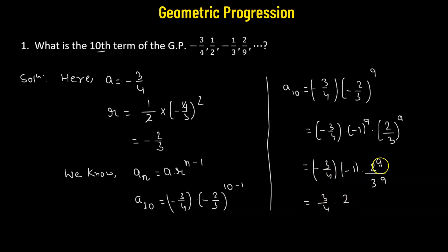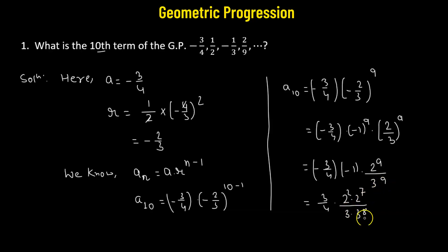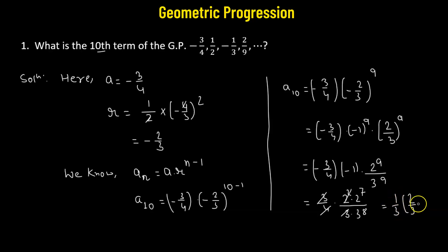We can write 2 raised to the power of 9 as 2 squared times 2 raised to the power of 7, and 3 raised to the power of 9 as 3 times 3 raised to the power of 8. This allows us to cancel 3 from the numerator and denominator, including the 4. Our final value is 1 third times 2 divided by 3 raised to the power of 7 — this is the 10th term of the given geometric progression.